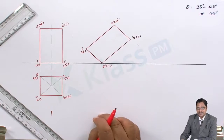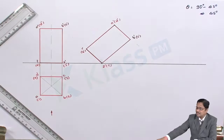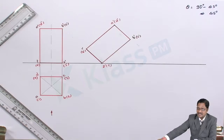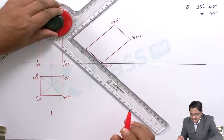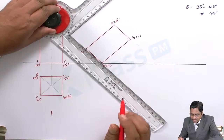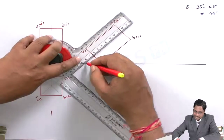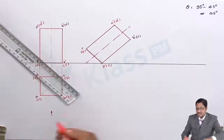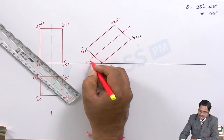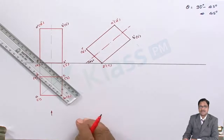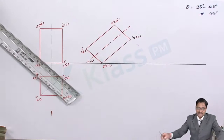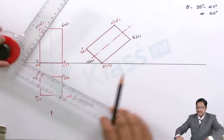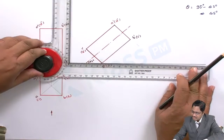Now the corresponding top view must be drawn. Before that, represent the axis — the midpoint of the inclined edge gives the axis. The axis is now drawn at the inclined position. For the corresponding top view, draw projectors again, aligning the top view in line with the front view by matching your XY reference line.